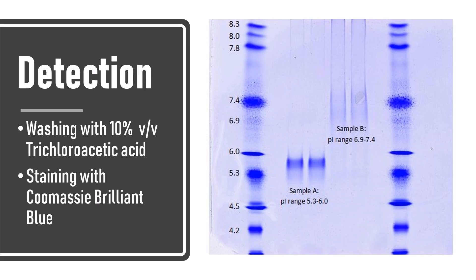After gel electrophoresis is performed, the gel must be stained to detect the proteins. However, in isoelectric focusing this staining cannot be done directly because the ampholytes will stain as well, giving you a totally blue gel. To avoid this, the gel is first washed with a fixing solution of 10% trichloroacetic acid, which precipitates the proteins and allows the much smaller ampholytes to be washed out. After removing all the ampholytes, the gel is stained using Coomassie brilliant blue, then de-stained and visualized.